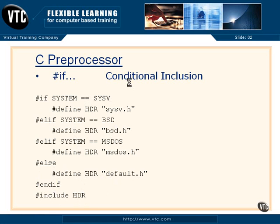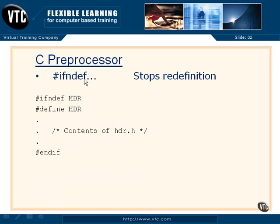That's conditional inclusion. We also have a nice item called if-not-defined, and this stops redefinition. Inside the header.h file, we can do an ifndef — if not defined HEADER — then go ahead and do these statements: define HEADER and do the other things that header.h is supposed to do, then that's the end of our if. If you wrap all the statements of your header files this way, you can include the header file over and over in all of your C source files, but it will only wind up being expanded once, because the HDR header will be defined. It stops redefinition and helps the preprocessor move along a little quicker.